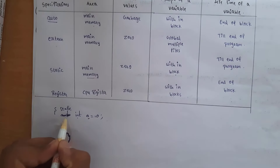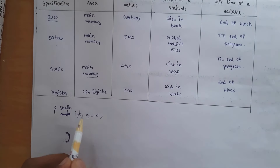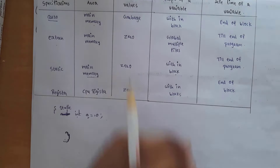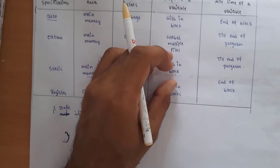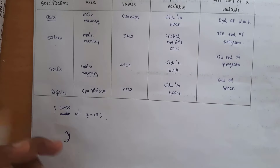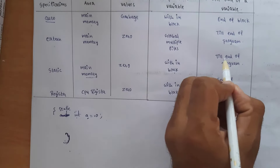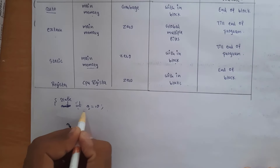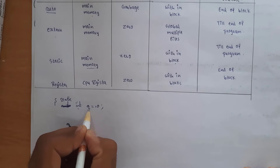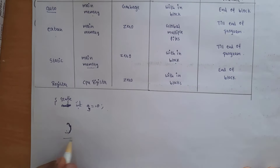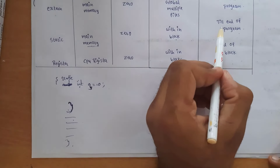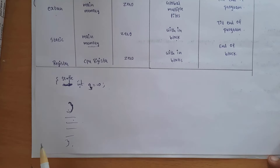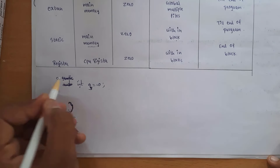For static: if you use static in place of auto, the variable a is stored in main memory, the scope is within the block, but the lifetime is until the end of the program. That means from when you declare the variable until the program ends, this variable will be present.